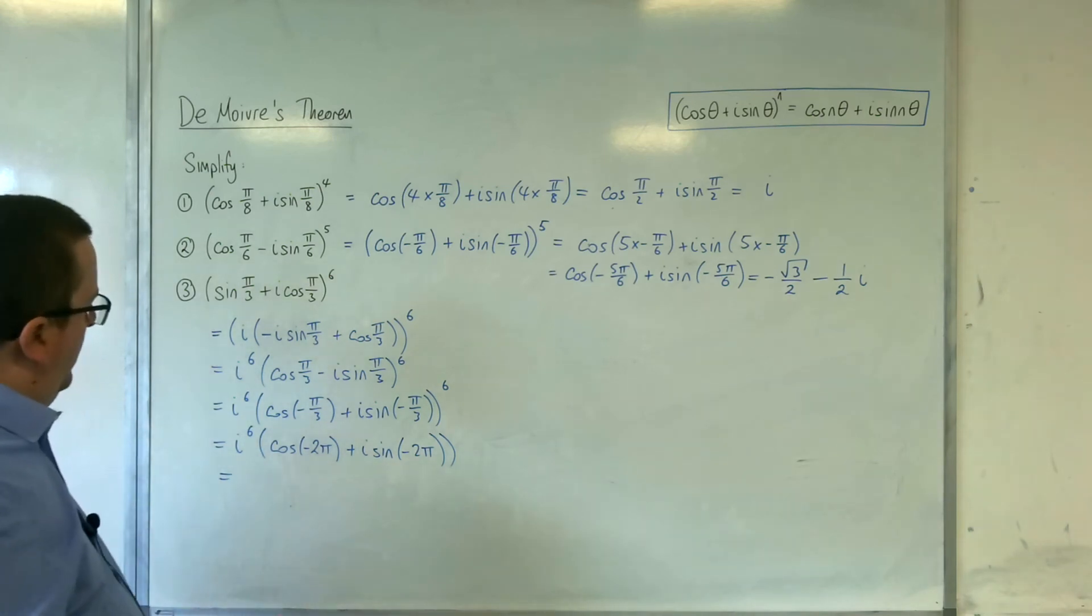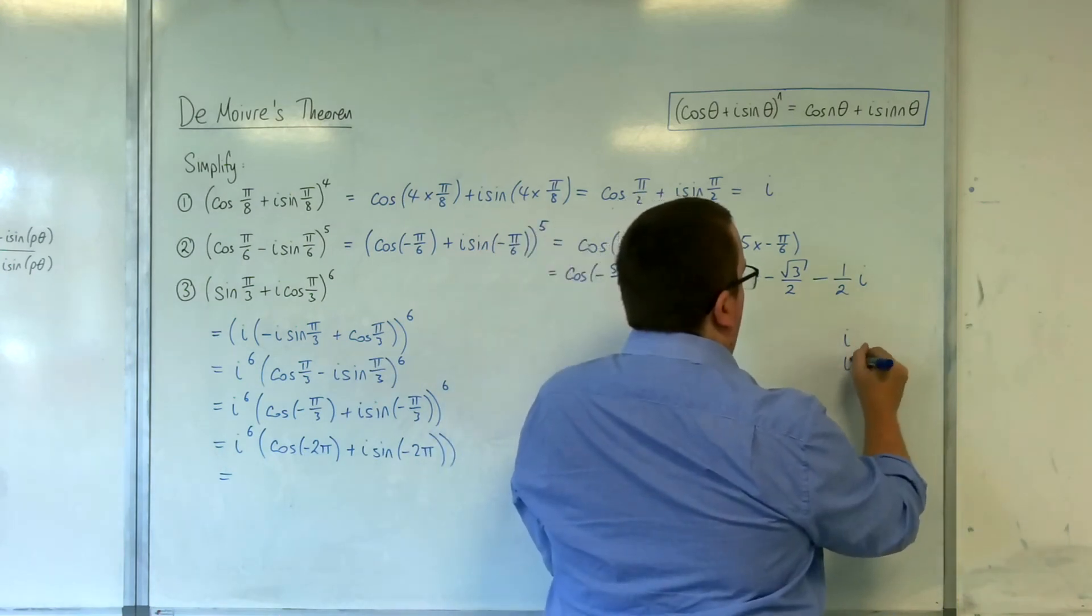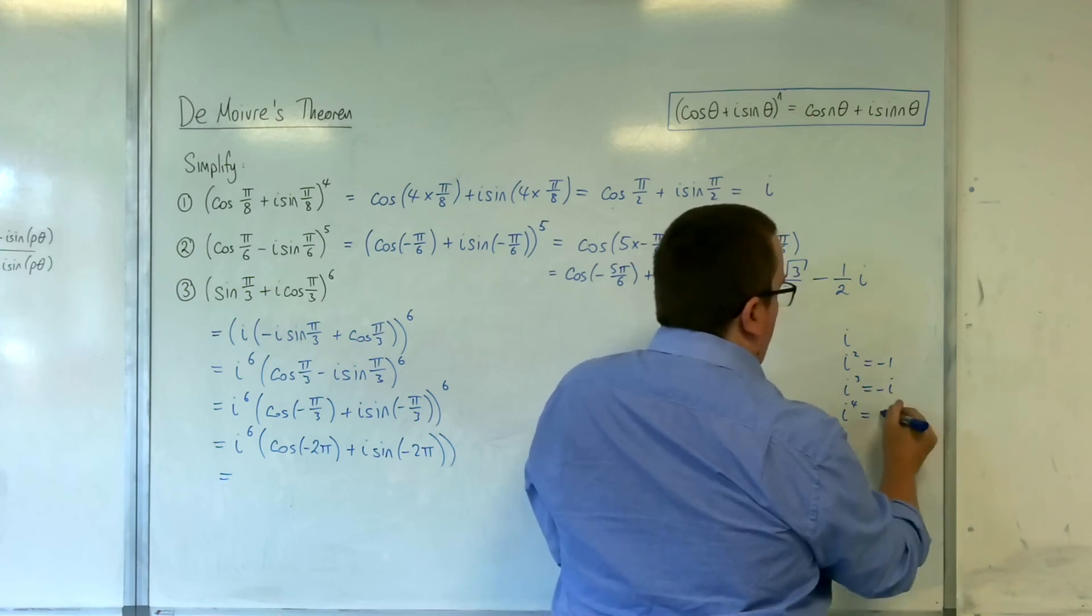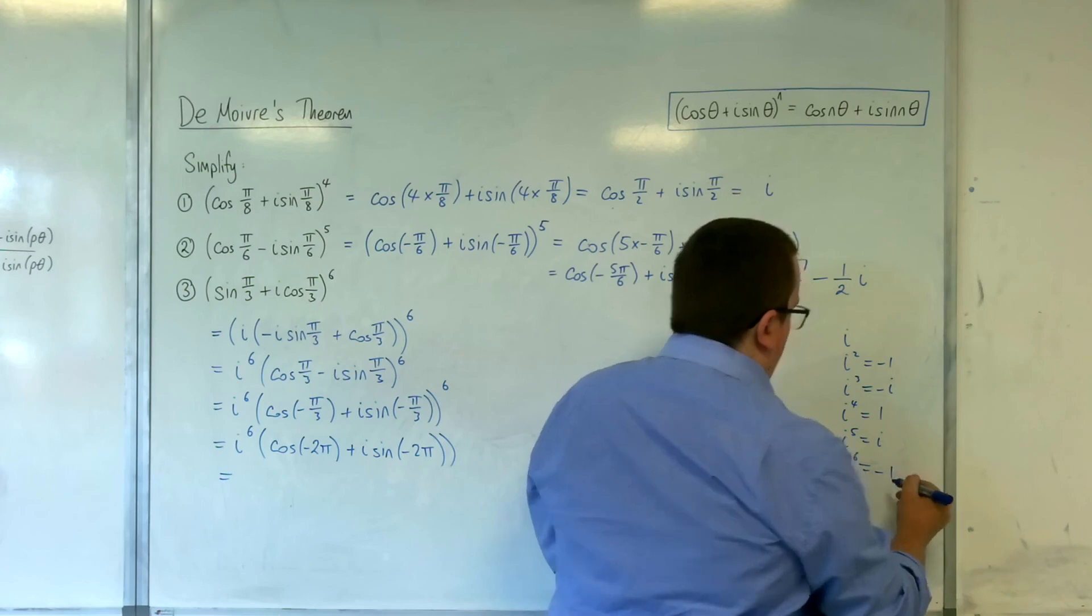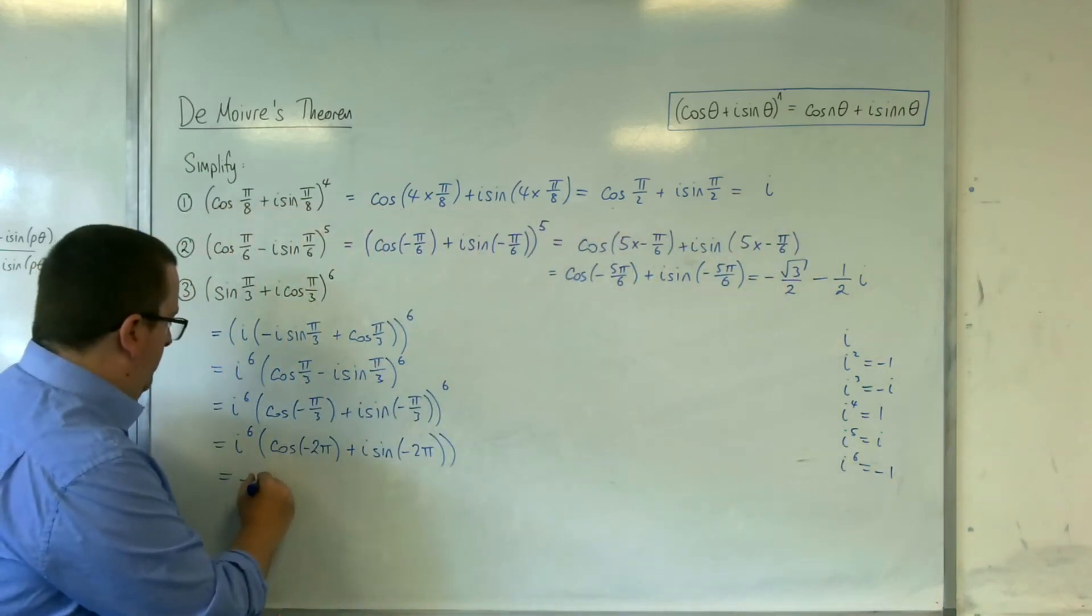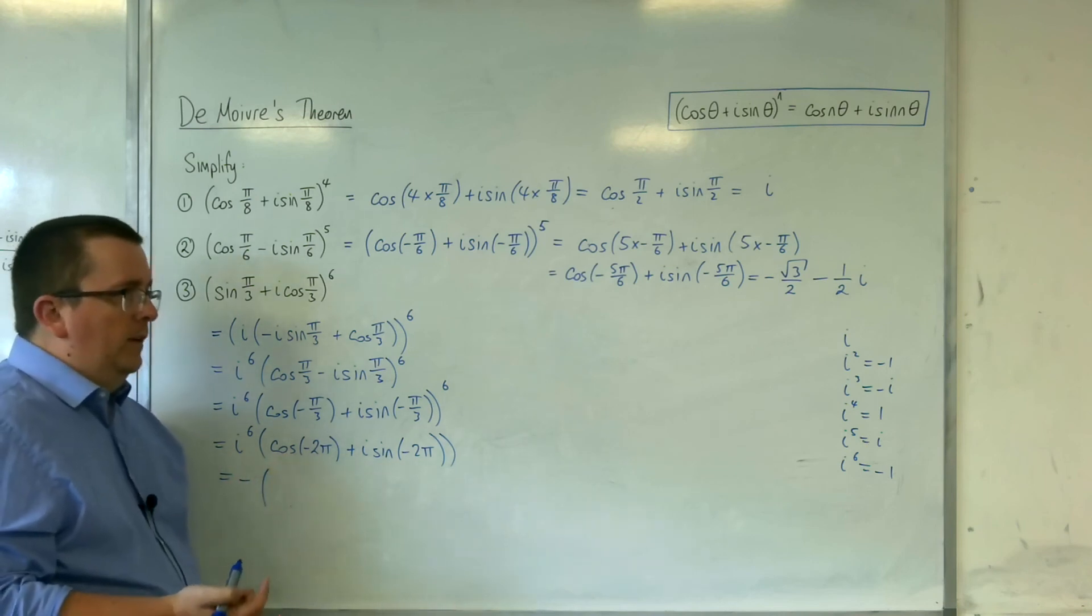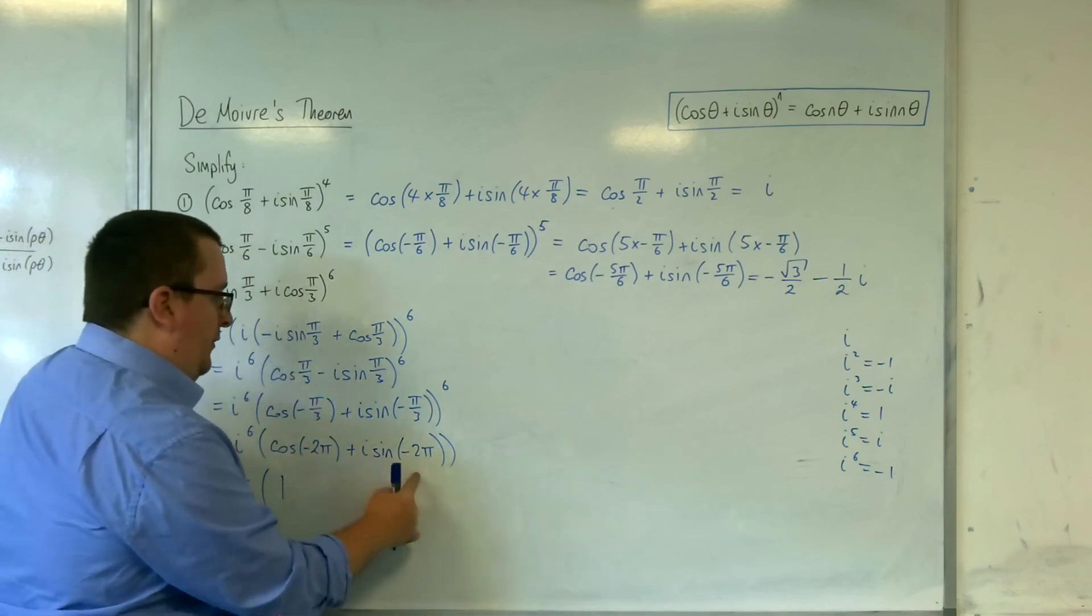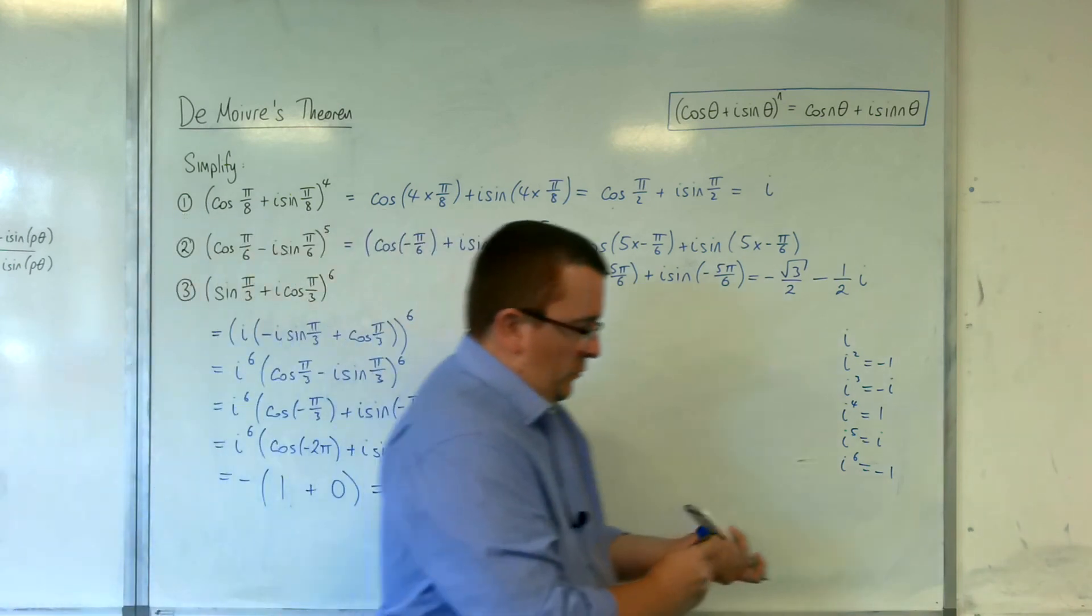Now i to the 6: i squared is minus 1, i cubed is minus i, i to the 4 is going to be 1, i to the 5 is i, so i to the 6 is i times i which is minus 1. So this is minus 1 times cosine of minus 2π, so that would be 1, and i sine of minus 2π, well that's 0. And so you just get left with minus 1.